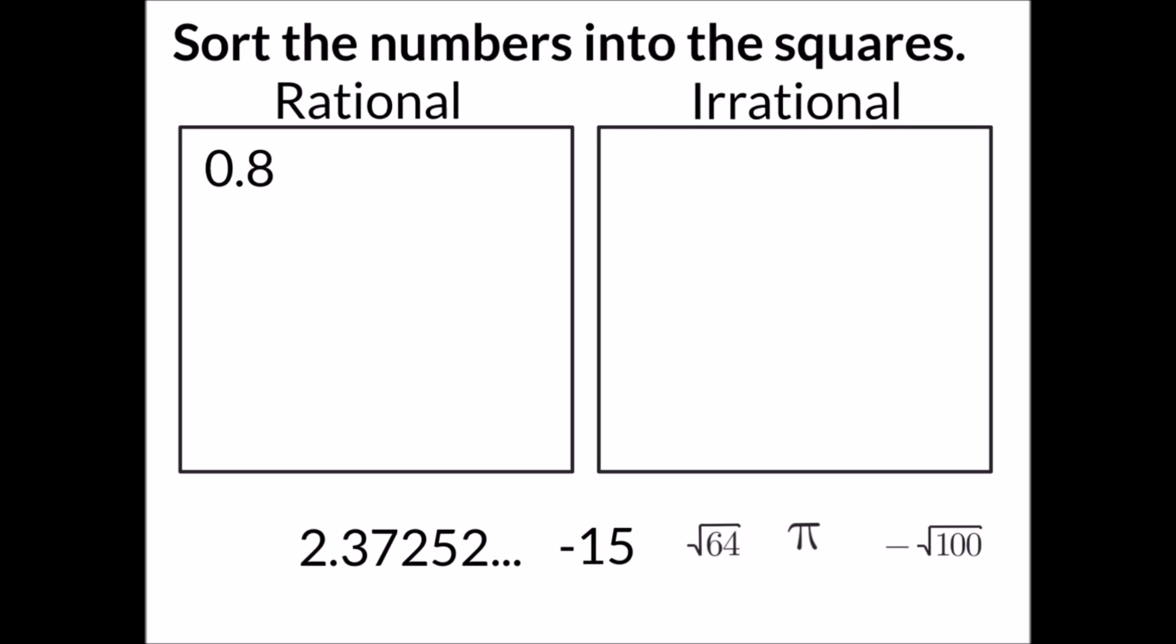The second number, 2.37252 continuing on, we know that there's not an end to it because of the dot dot dot and no repetition. So we're going to say it's an irrational number.